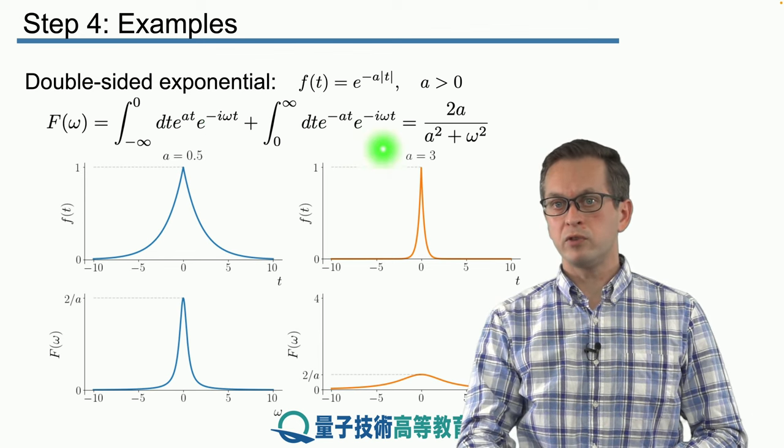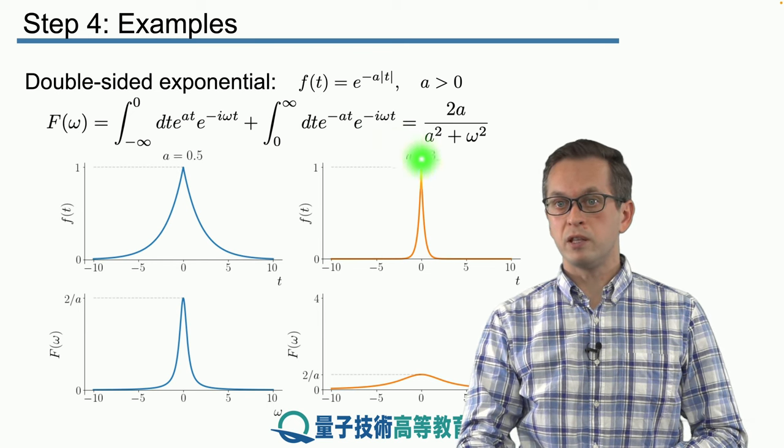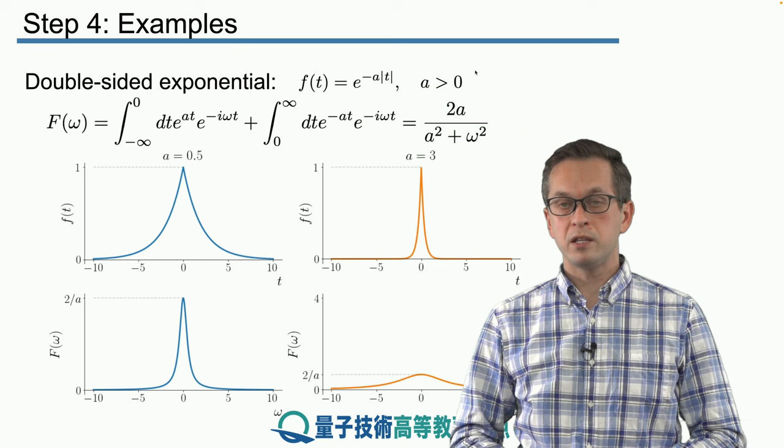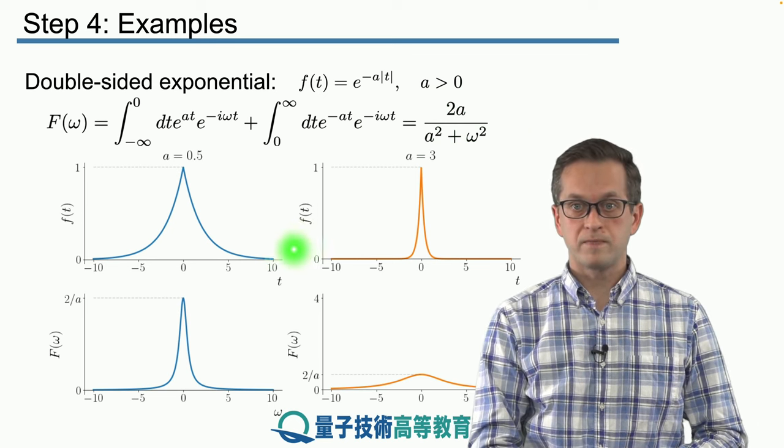And I'm not doing it here, but after a few steps of algebra, you can convince yourself on your own that you get the following expression. 2a divided by a squared plus omega squared. And what that looks like is as follows.